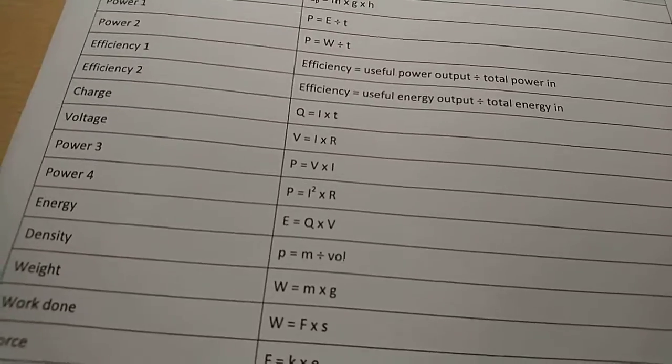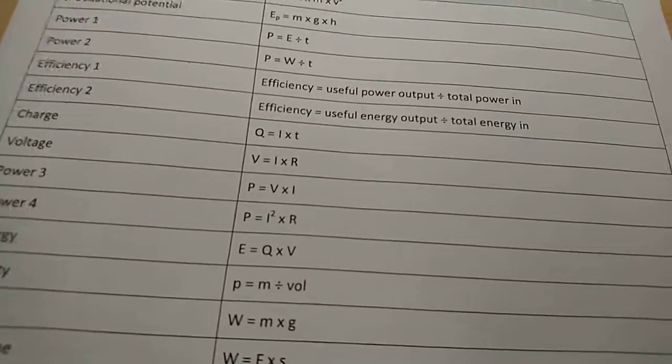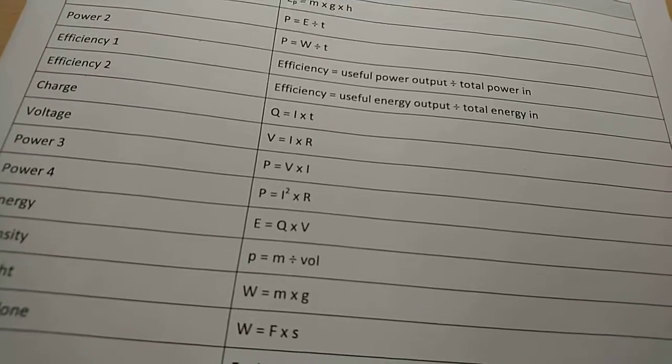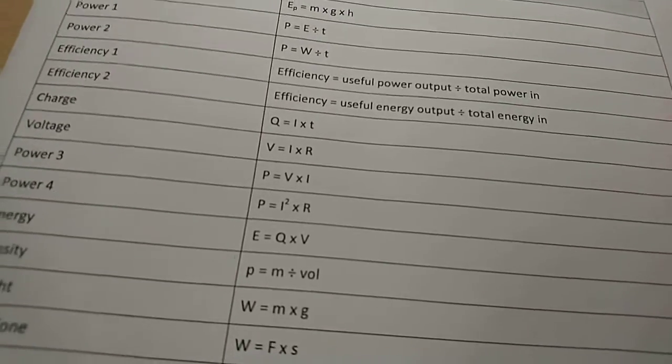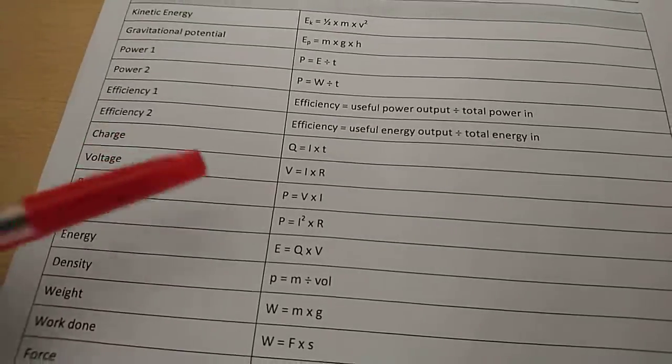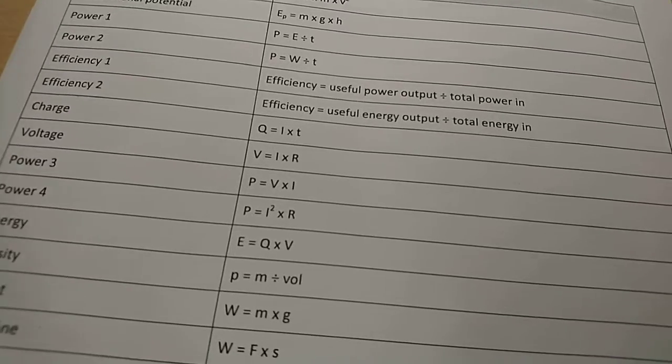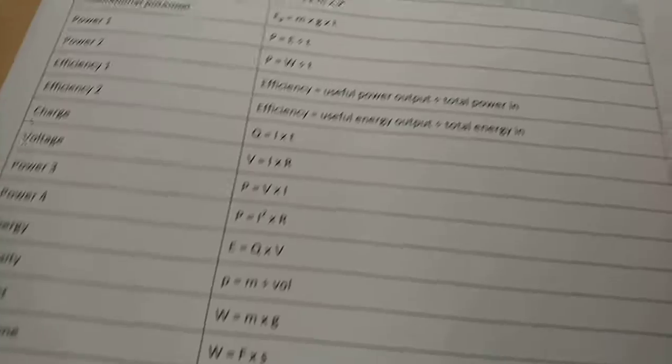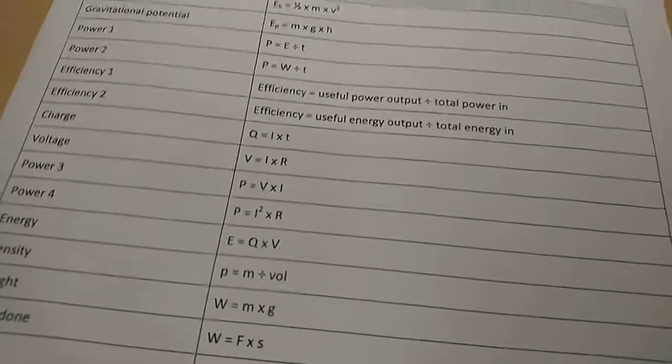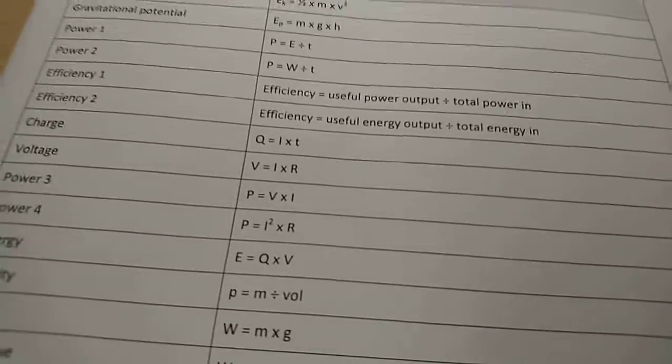So voltage. Voltage or potential difference in volts equals current in amps times resistance. So basically this is just a rearranged version of R equals V over I. R equals V over I is resistance equals voltage divided by current. This is just it rearranged. It means the exact same thing.